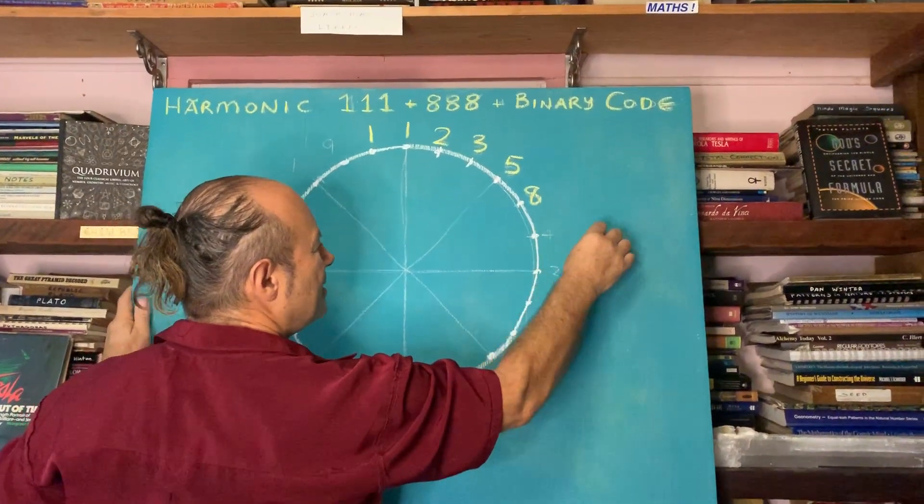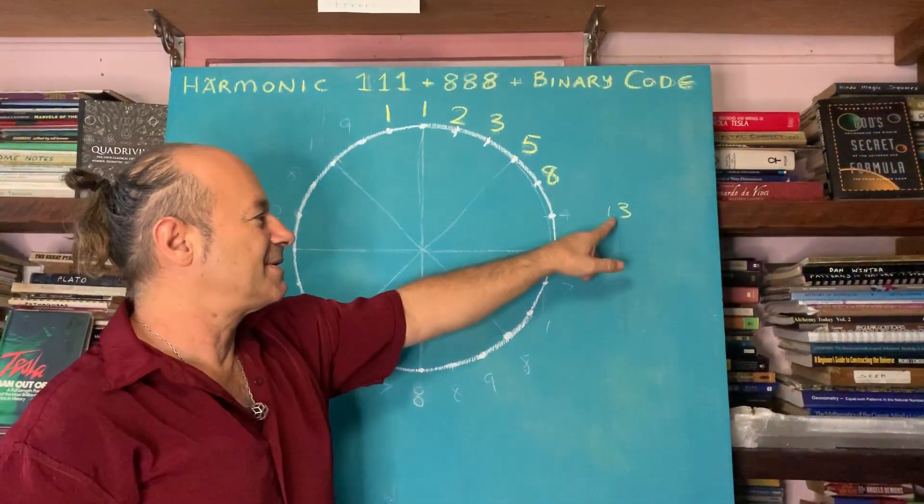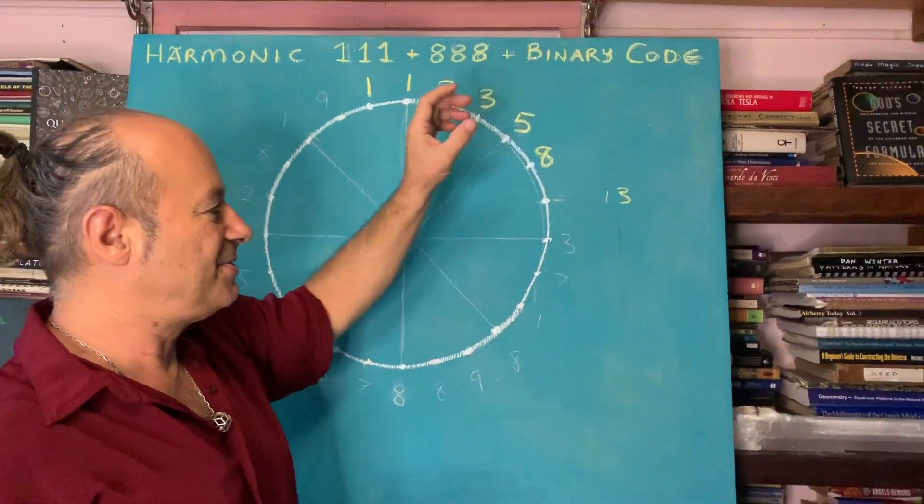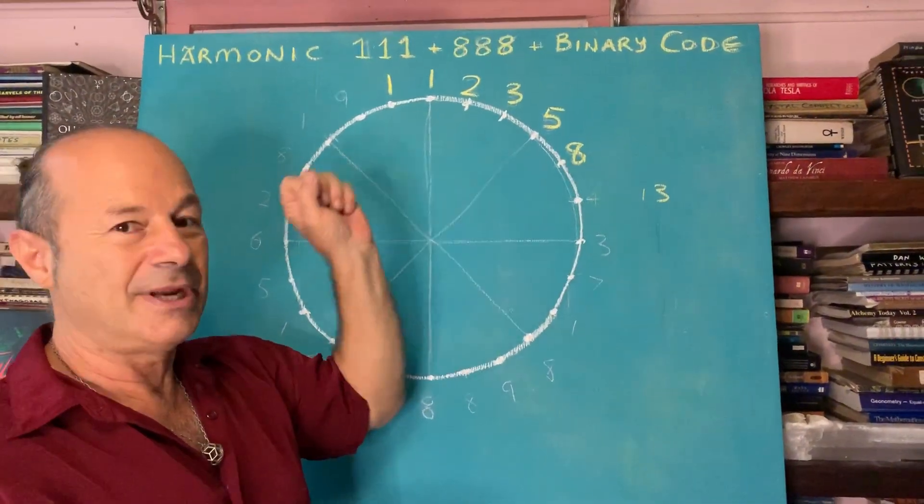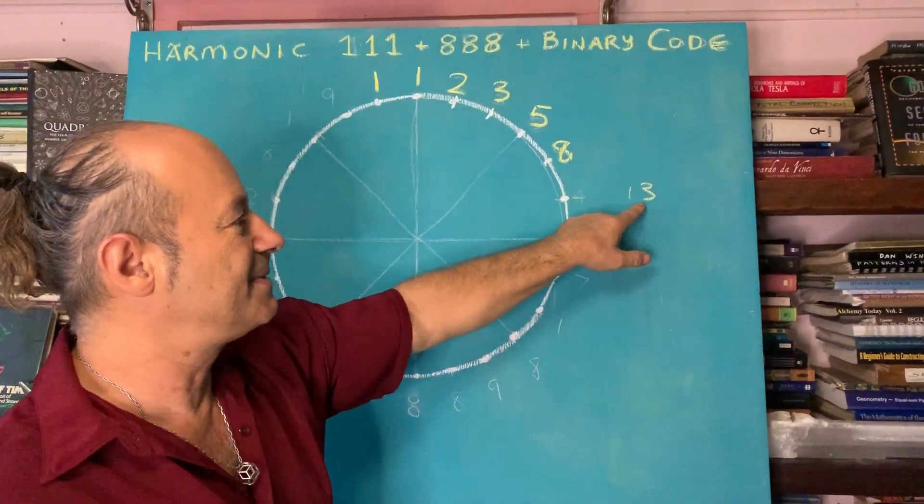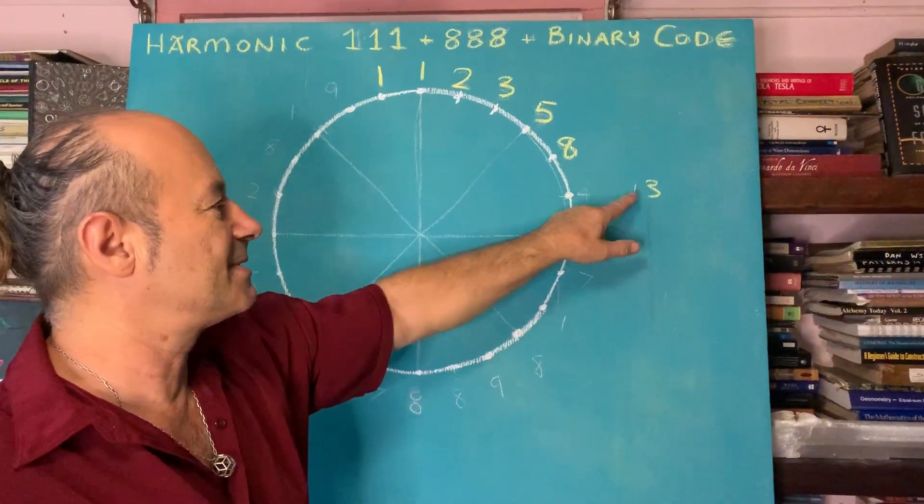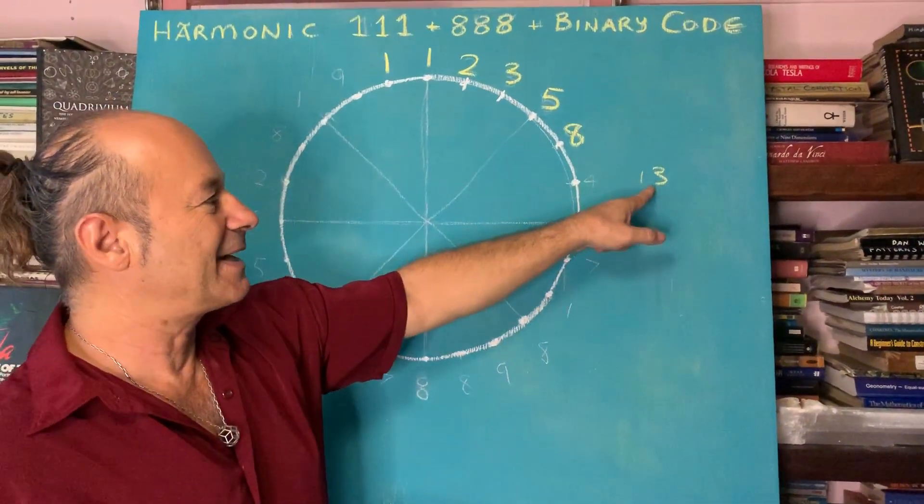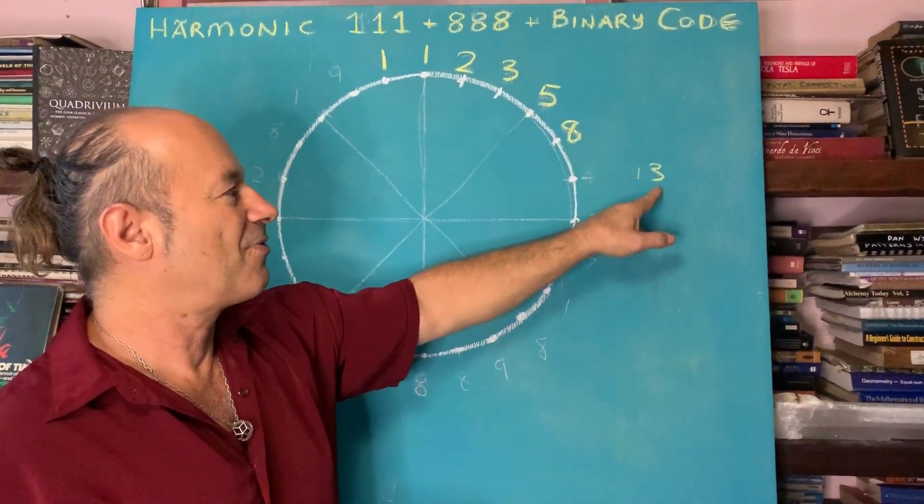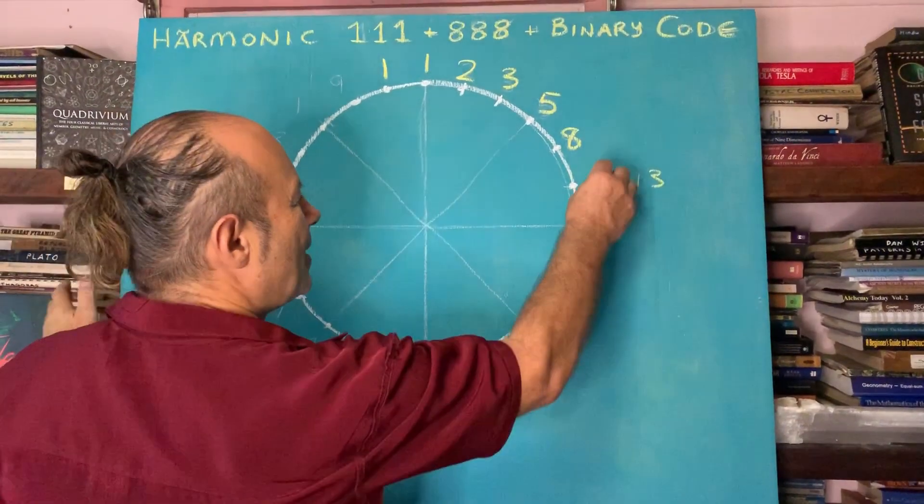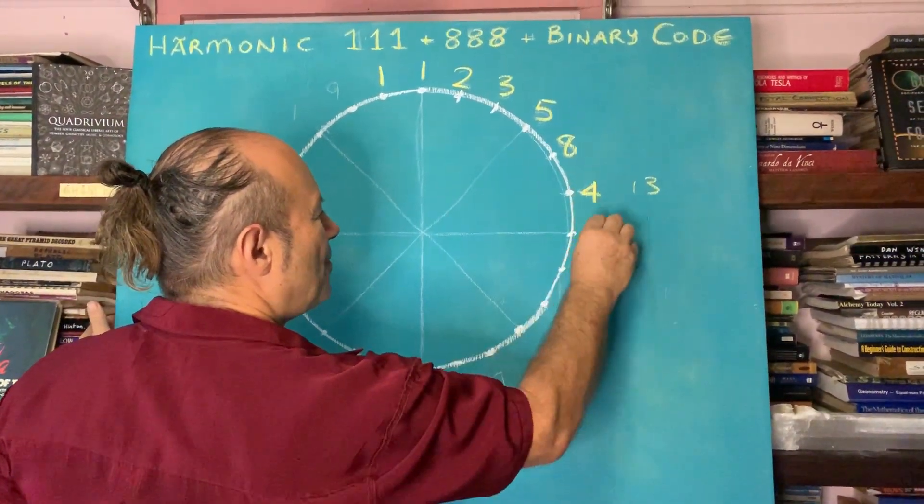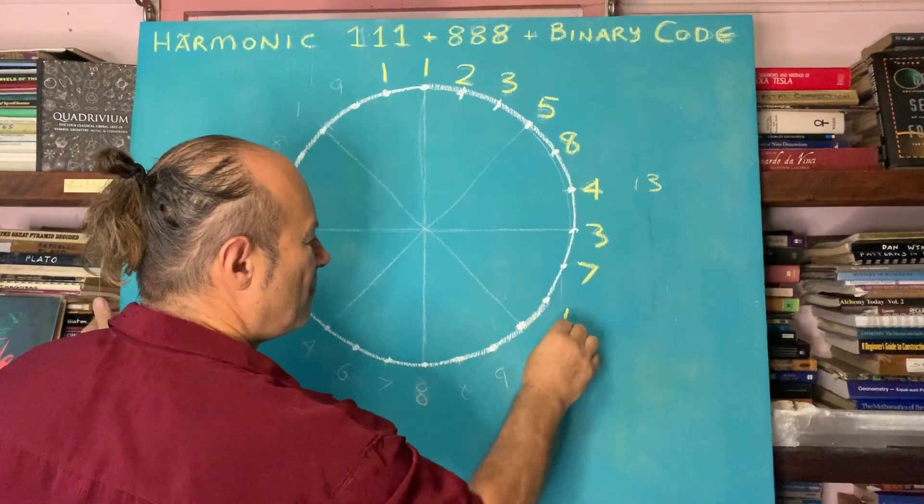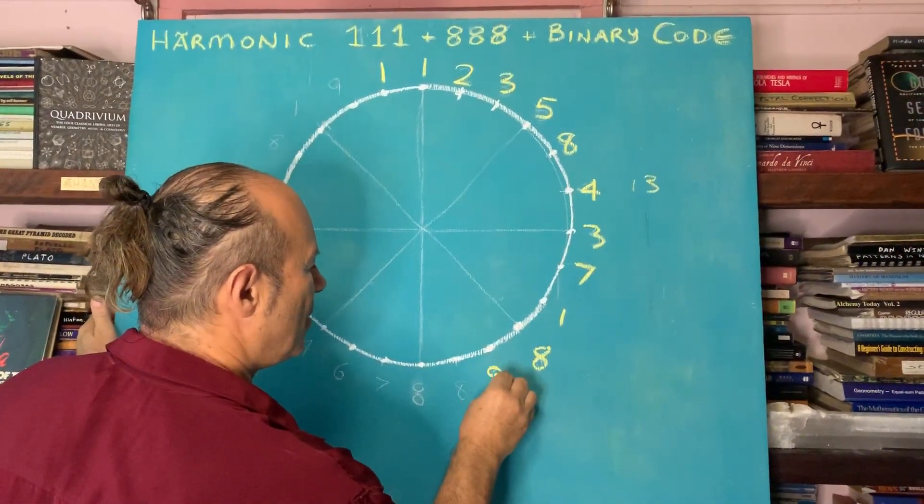When we get to 13, we take away nine. Digital compression is called continued subtraction of nine, reducing double digits to a single digit. But instead of taking away nine, I just add the digits. So it goes four, three, seven, one, eight, nine.